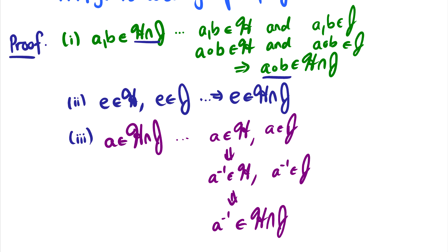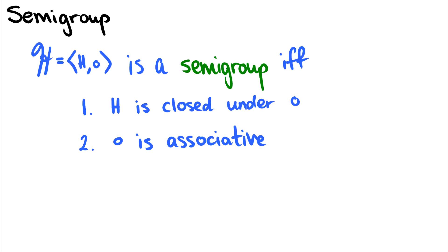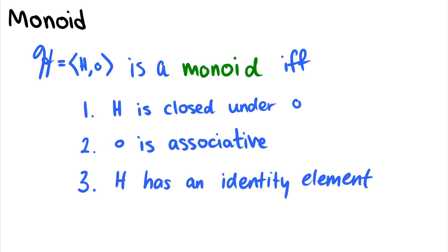Associativity we do have to prove as well — I just left it out of the writing because it's monotonous, but it follows the same pattern. Now there are different types of partial groups. One is a semigroup, which occurs when we have some set h and operation where h is closed and the operation is associative — those are properties one and two. A monoid is a semigroup with an identity, or we can think of a monoid as a group without inverses. A semigroup has properties one and two, a monoid has properties one, two, and three, and a group has all four properties.